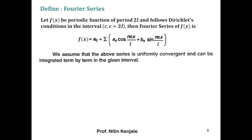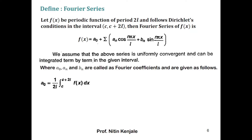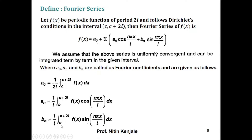The Fourier coefficients a₀, aₙ, and bₙ are given as follows: a₀ = (1/2l) × integral of f(x) dx over c to c+2l; aₙ = (1/l) × integral of f(x) cos(nπx/l) dx over c to c+2l; bₙ = (1/l) × integral of f(x) sin(nπx/l) dx over c to c+2l. This is the generalized definition of the Fourier series of f(x) in the interval c to c+2l with period 2l.